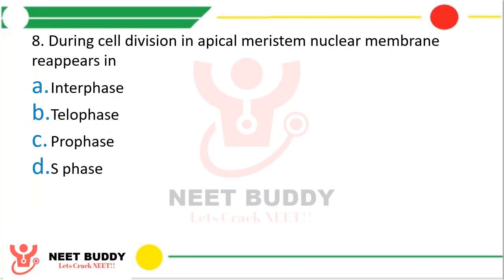Question 8: During cell division in apical meristem, the nuclear membrane reappears in? Option A: Interphase. Option B: Telophase. Option C: Prophase. Option D: S phase. In which stage of cell division does the nuclear membrane reappear? The correct answer is Option B, telophase.